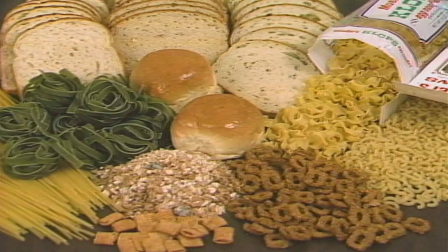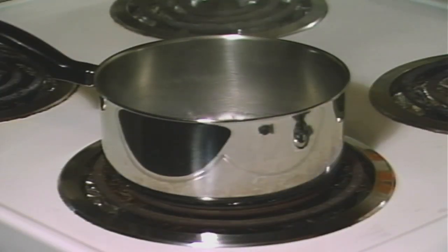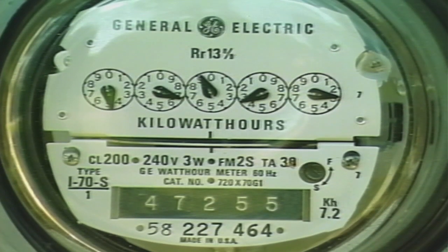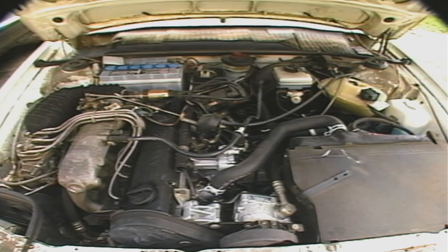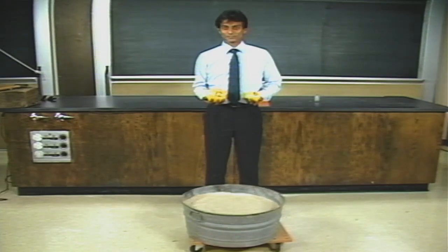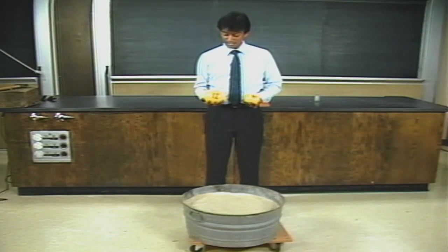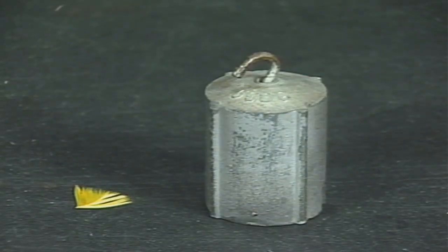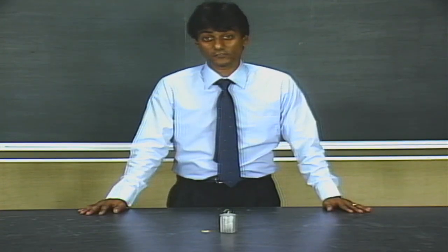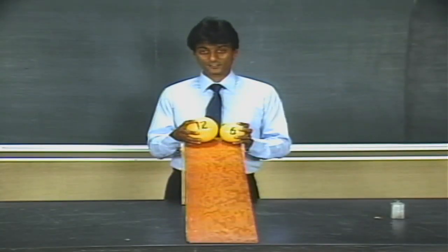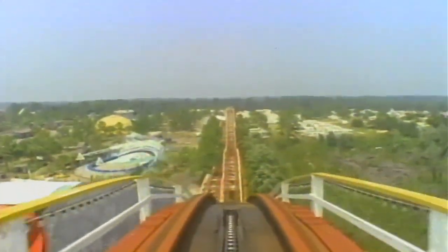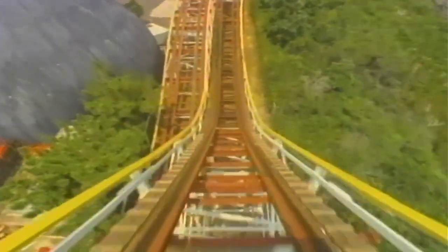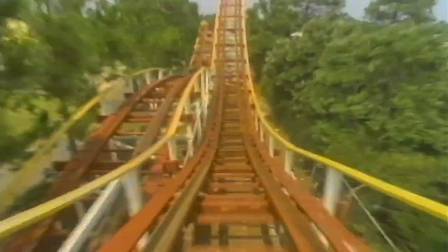Are you up to the coaster challenge? Here's your chance to test your ability at designing roller coasters. The unit of measurement of electricity is kilowatt hours, and mechanical energy is measured in newton meters or joules. Now it's your turn to be the coaster engineer. Modify the coaster's design and see how it affects acceleration, potential and kinetic energy, g-force and speed. Modify the coaster car by changing its mass and power. You can modify the coaster by selecting different hill heights. Modify the coaster by changing the radius of the curve.